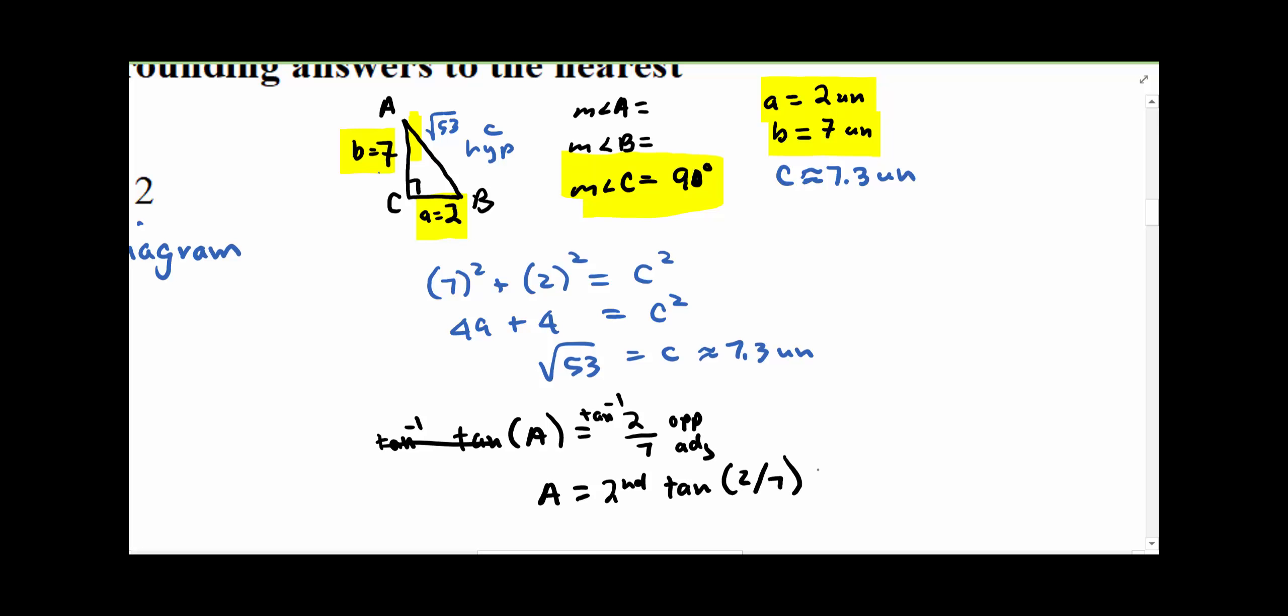So 2nd tangent 2 divide 7, right parentheses, and A is equal, so the measure of angle A is about...